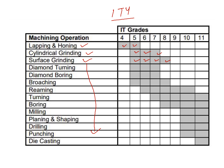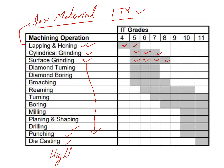With low IT grade numbers, such as those for lapping and honing, we can achieve close tolerances because lapping and honing remove material in very small layers. On the other hand, die casting, punching, or drilling remove much more material from your part. With these higher IT grades, you will not be able to achieve close tolerances. So IT grades define the different machining operations for which we can achieve our desired tolerances.